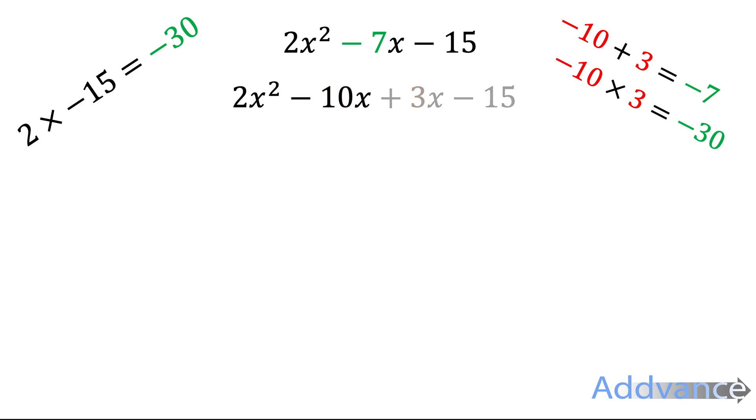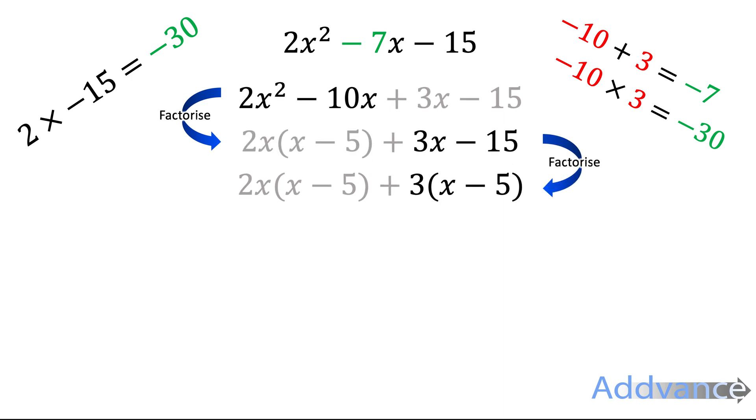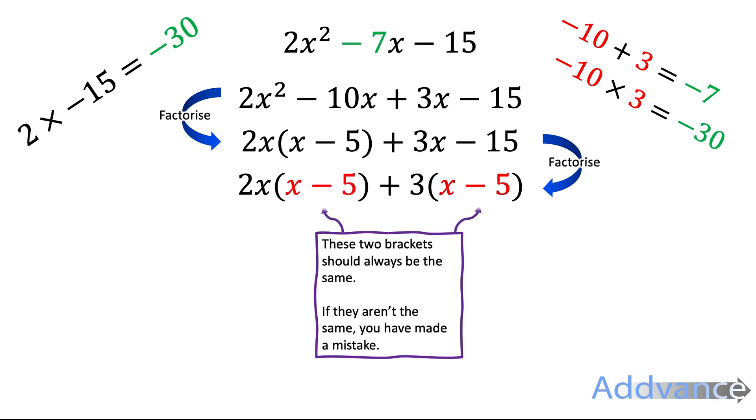Now we take the first two terms and we factorise them. Then we take the last two terms and we factorise these two terms. And you should find that both times you get a common factor of x minus 5.